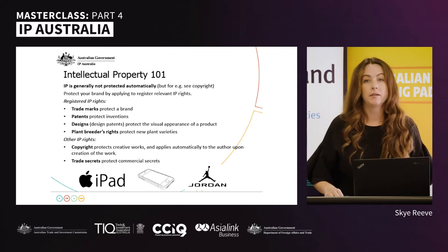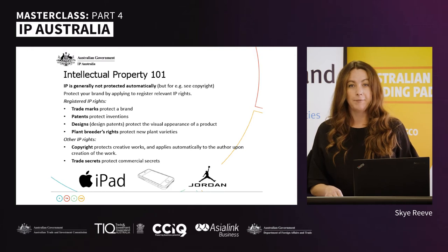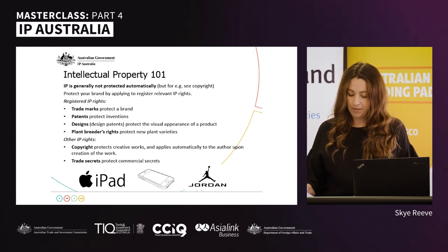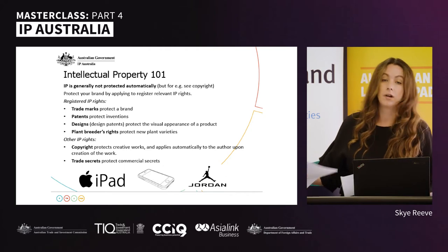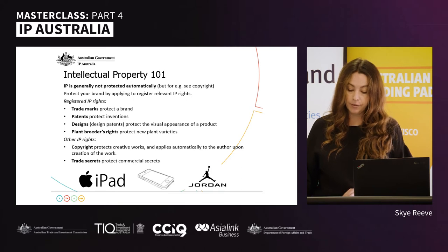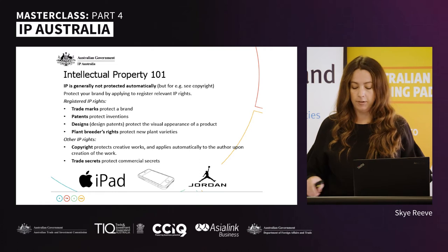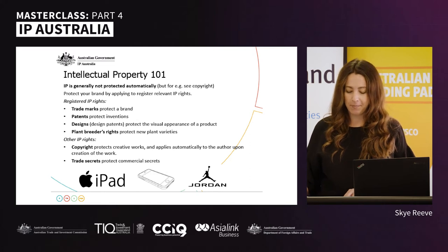IP is generally not protected automatically — you will need to register your rights. The best way to protect your brand is to register your trademark. Other rights such as copyright and trade secrets aren't necessarily registered, but if you have a trademark, patent, design, or plant breeders right you will need to register them. We recommend that you register them with IP Australia.